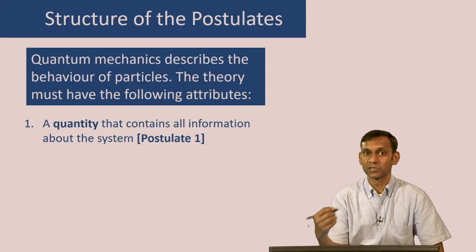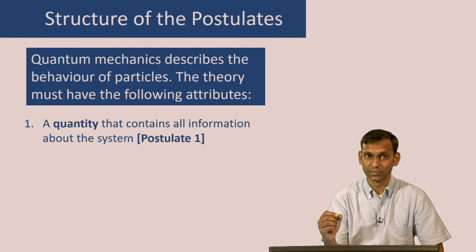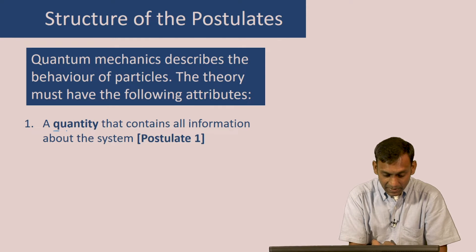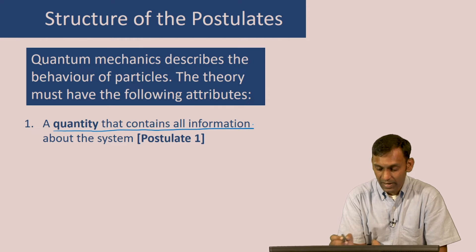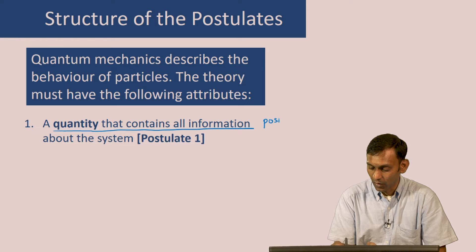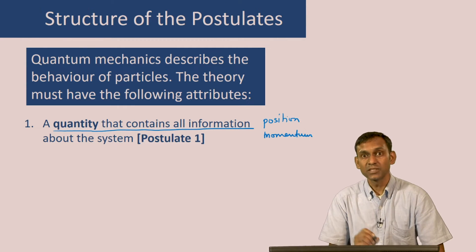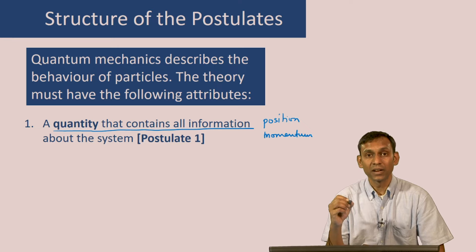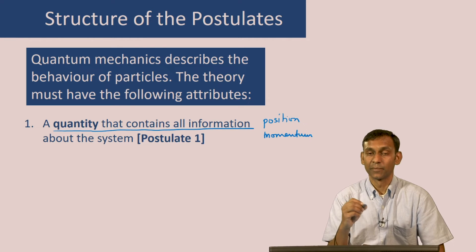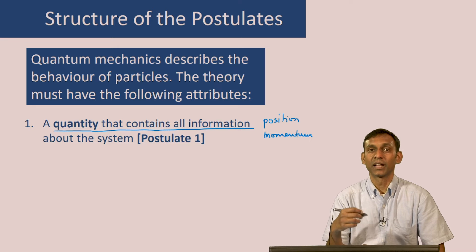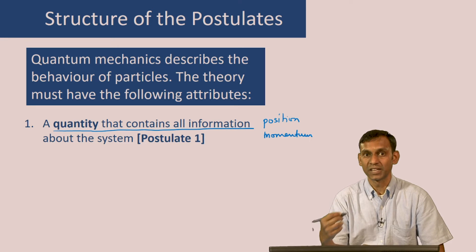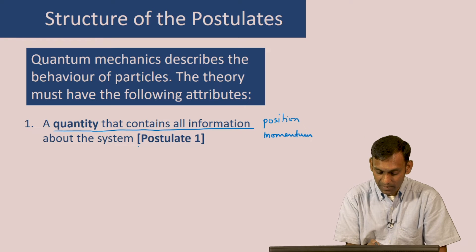The first thing that a theory describing the motion of particles should have is a quantity which contains all information about the system. In classical mechanics, this quantity is the position and the momenta of the different particles. In quantum mechanics there is a different quantity, because the position and momenta of a particle may not be well defined — there would be a distribution.